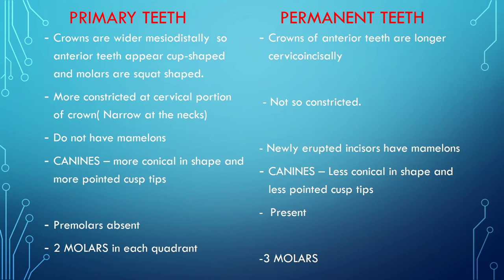Canines are more conical and more pointed in primary teeth, while in permanent dentition they are less conical and pointed. Premolars are absent in primary teeth but present in permanent. There are two molars in each quadrant in primary dentition and three molars in permanent dentition.